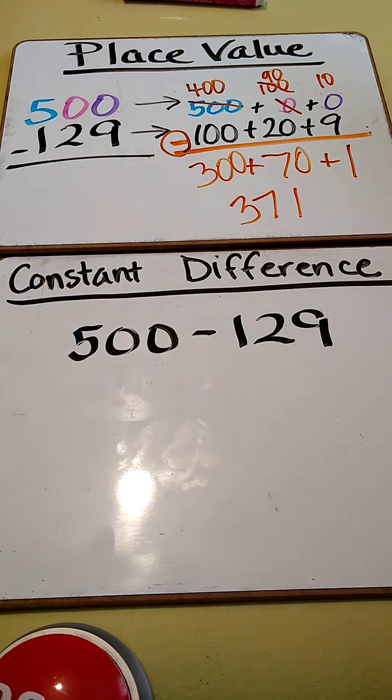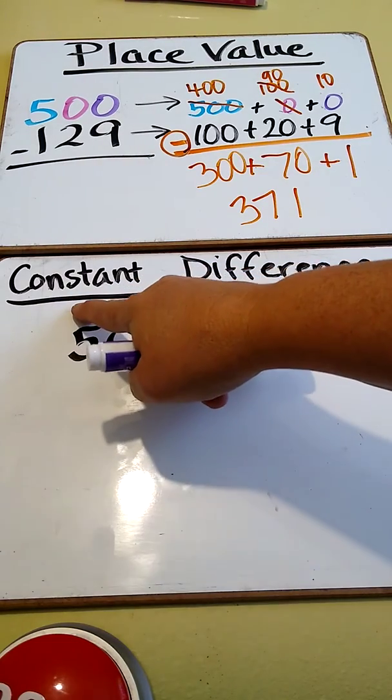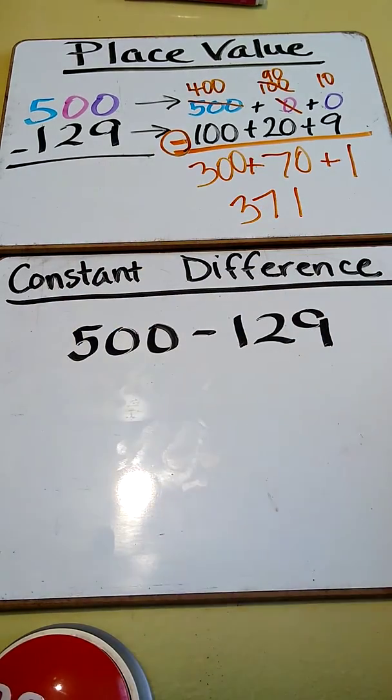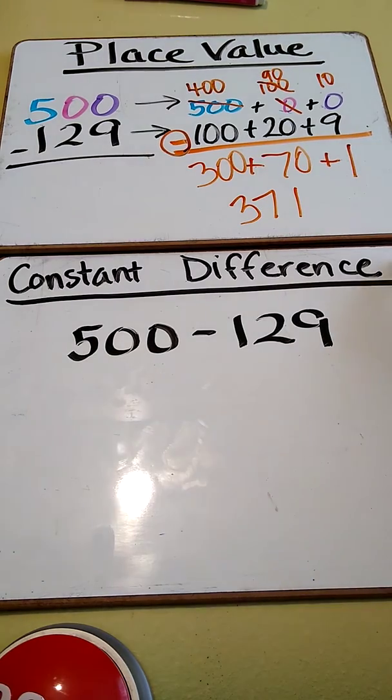So now when we're doing constant difference, it's kind of like the compensation strategy, except that word constant here. Constant means whatever you do to one side, you have to do the same thing to the other side. And we're trying to find the difference. So the difference, whatever we're taking away from one side to make it an easier number to subtract, we have to do with the other one.